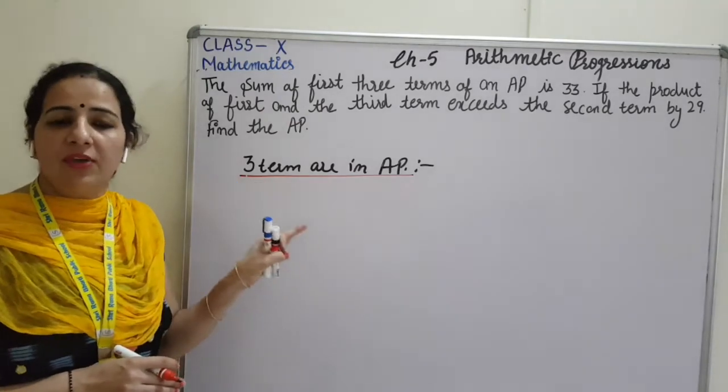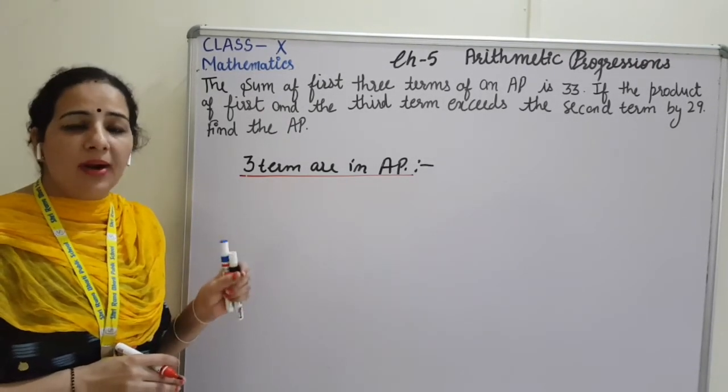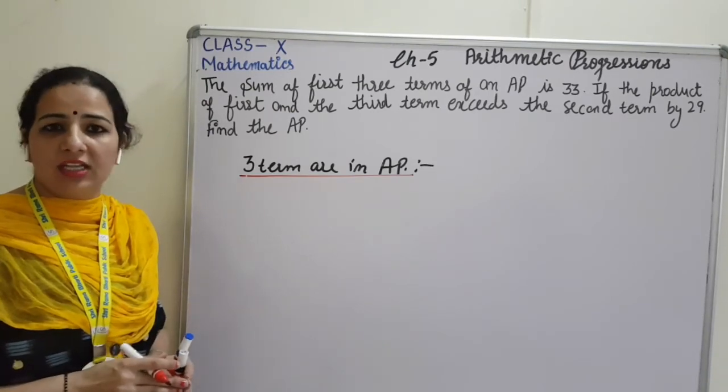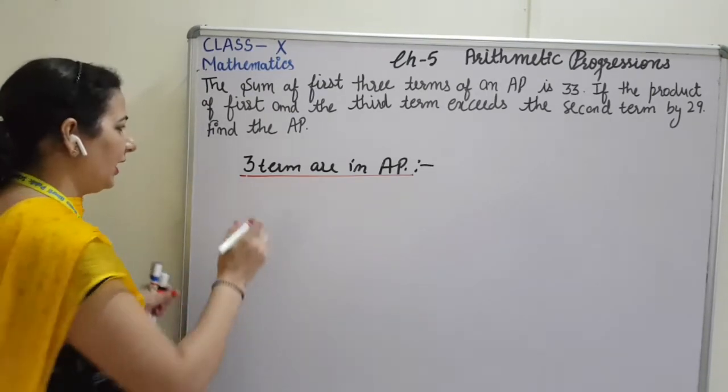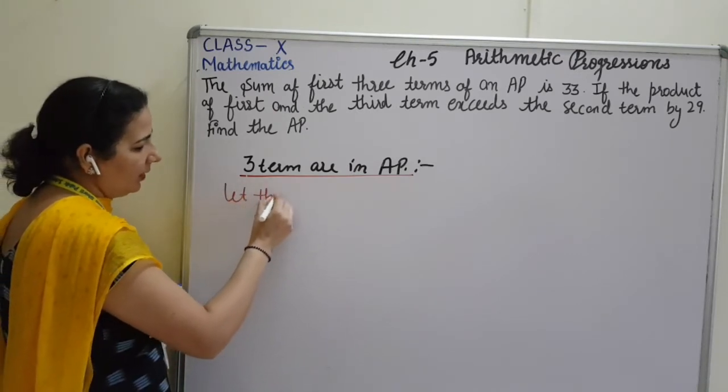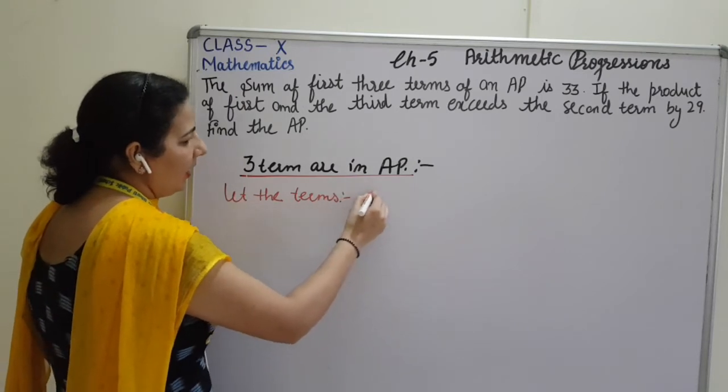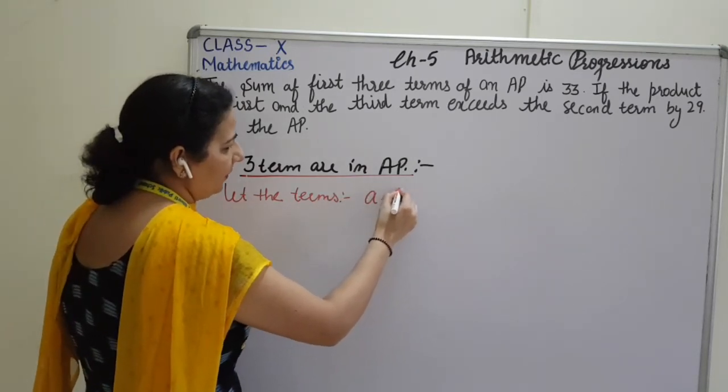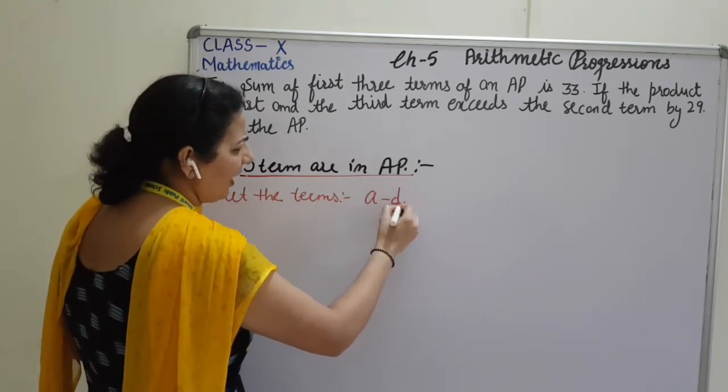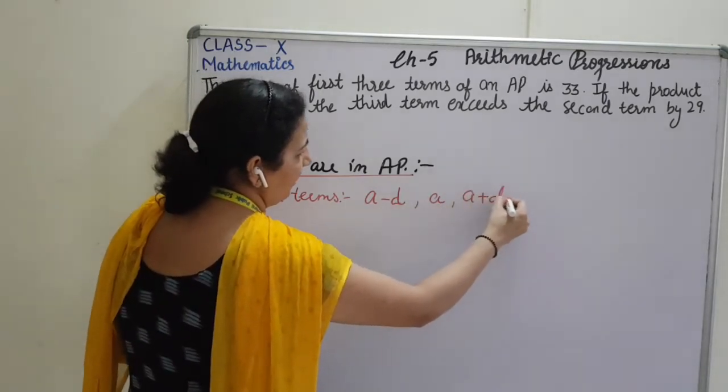For the 3 terms AP, we are going to choose the AP like X, X plus 2. But for just making the question more easy and comfortable, we will write: let the terms are A minus D, A, A plus D. You can take D or B, any one letter.